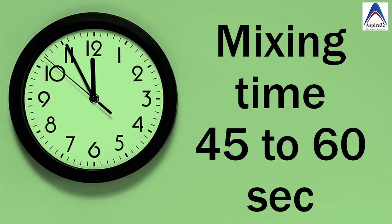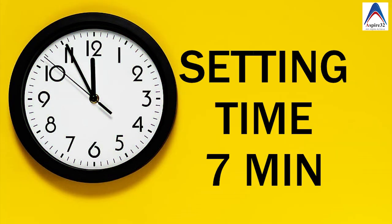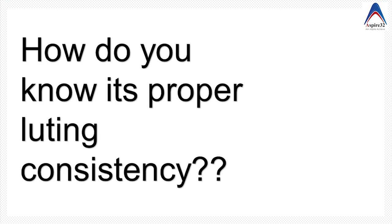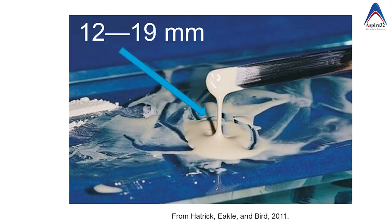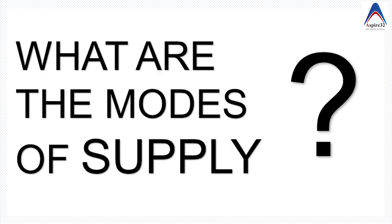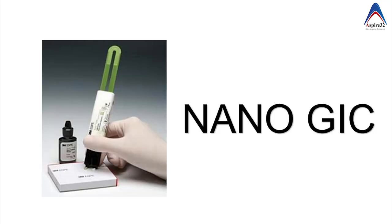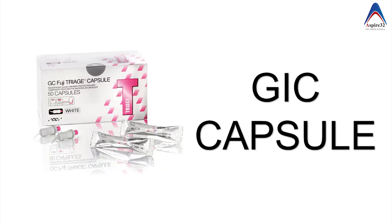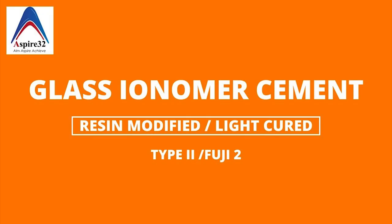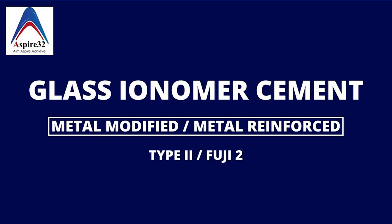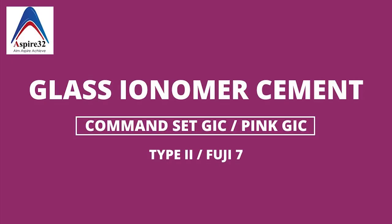The mixing time for glass ionomer cement is 45 to 60 seconds and the setting time is around 7 minutes. To confirm you have reached luting consistency, you should form a string of 12 to 19 millimeters. Apart from the conventional powder-liquid form, you also have nano GIC available in a clicker system, and GIC in capsule form, which makes it easier to fill large cavities.